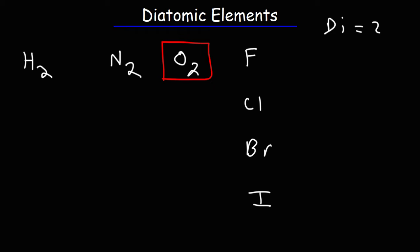There are other allotropes of oxygen. For instance, ozone. You heard of this one. In the upper atmosphere, you'll find ozone, which exists as O3. So that's an allotrope of oxygen. It's another form of elemental oxygen.